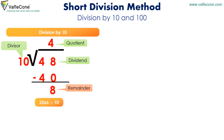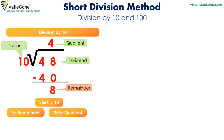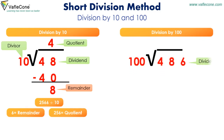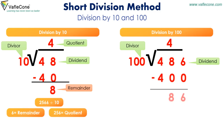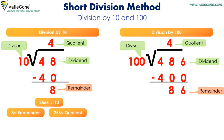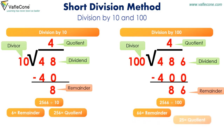For example, in 2566 divided by 10, 6 is the remainder and 256 is the quotient. Division by 100: here 486 is the dividend and 100 is the divisor. 100 into 4 is equal to 400; doing subtraction, 486 minus 400 gives 86 as the remainder and 4 as the quotient. So when dividing by 100, the digits in the 1's and 10's places become the remainder, and the remaining digits form the quotient — like in 2566 divided by 100, 66 is the remainder and 25 is the quotient.